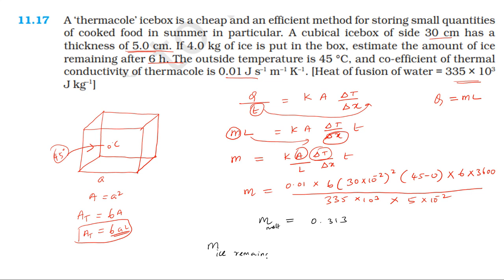Mass of ice remaining equals total mass, 4 kg, minus mass of ice melted, mass of ice melted is 0.313, approximately 0.3. So 4 - 0.3 = 3.7 kg.